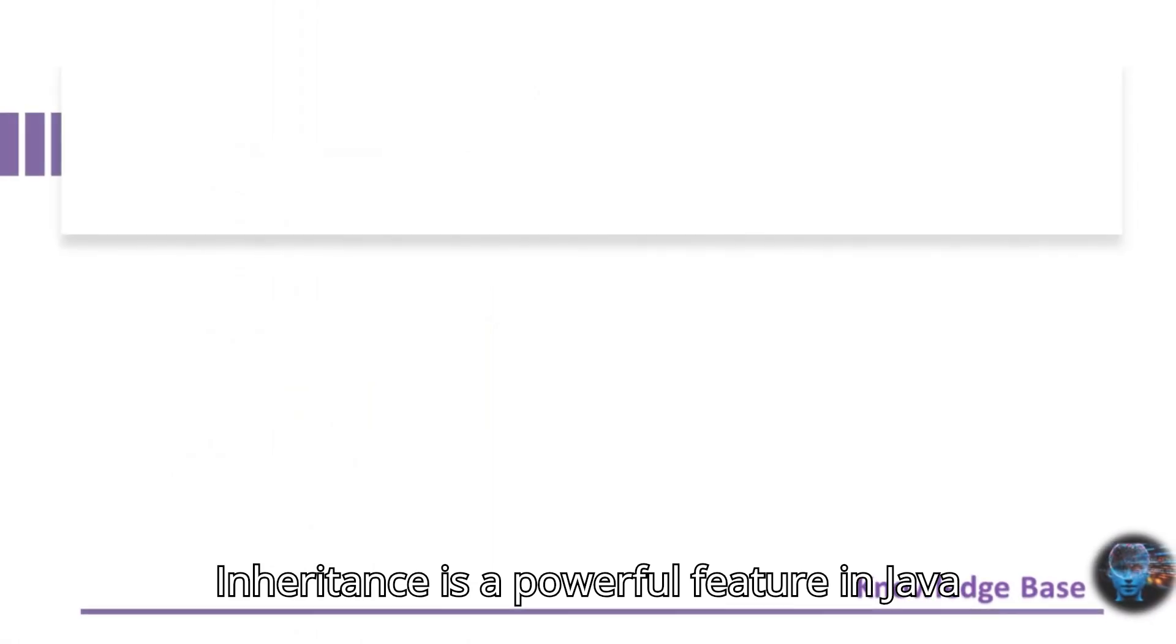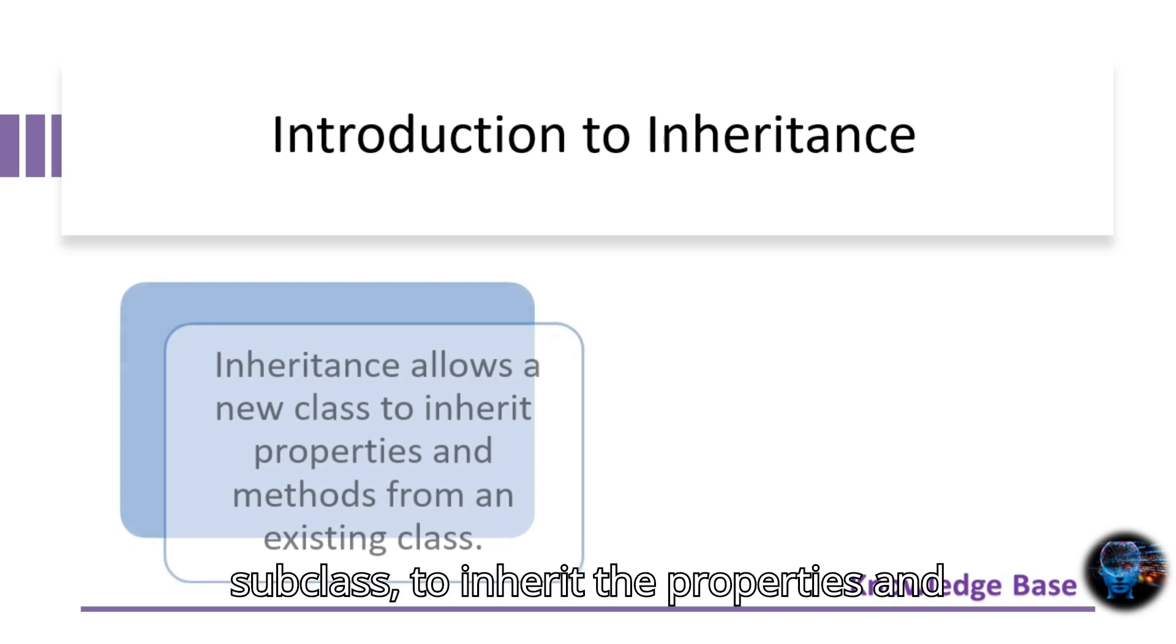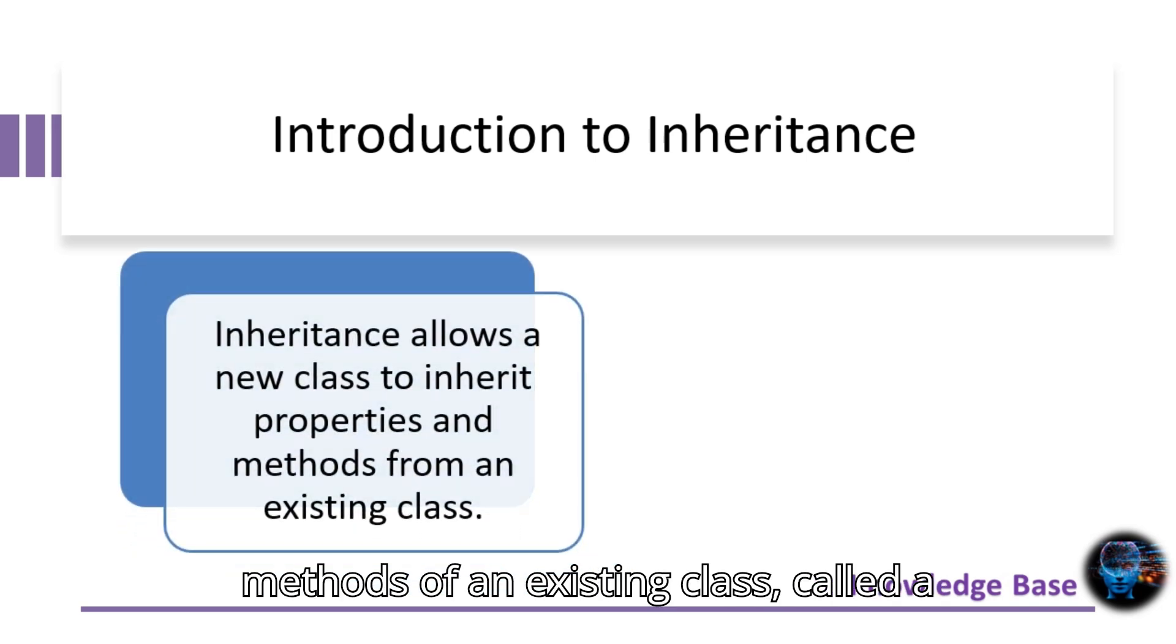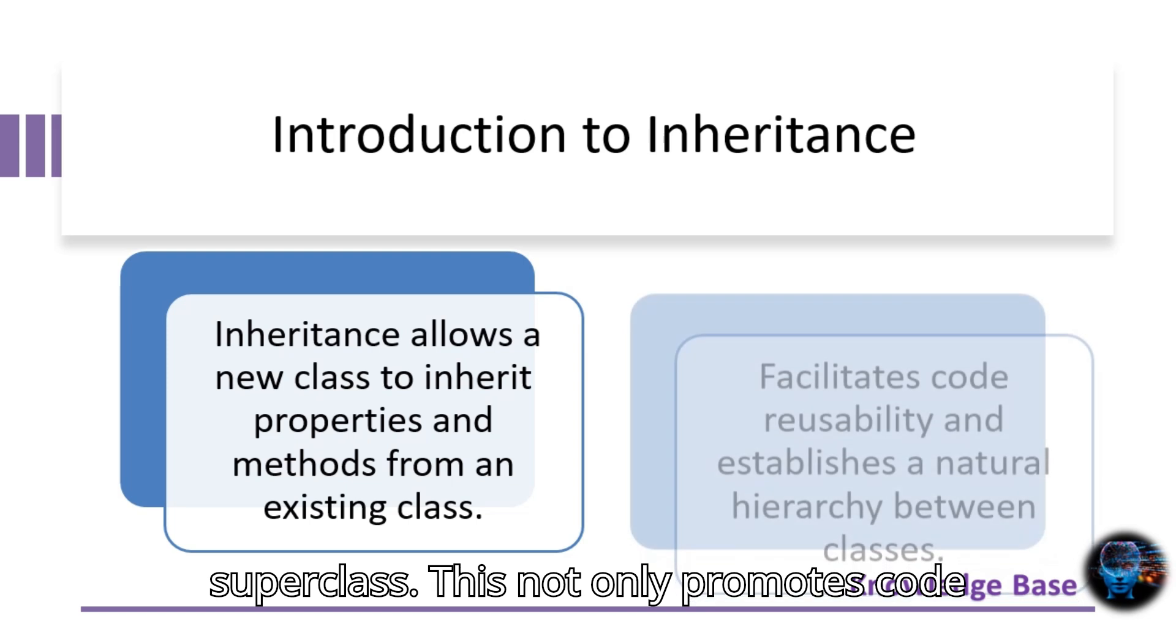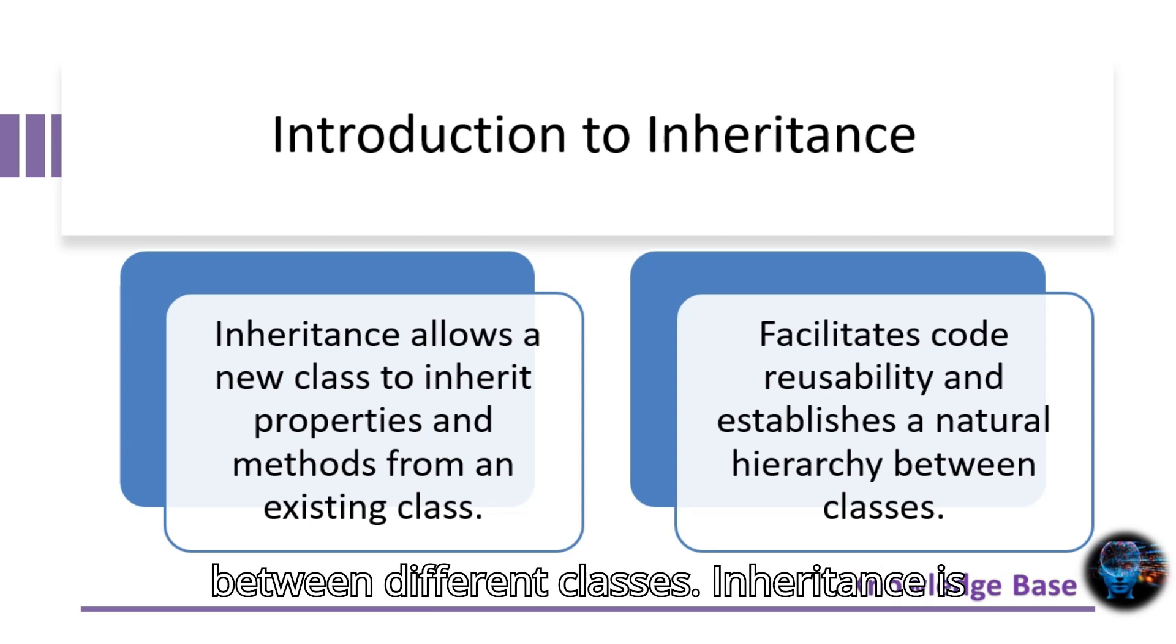Inheritance is a powerful feature in Java that allows a new class, known as a subclass, to inherit the properties and methods of an existing class, called a superclass. This not only promotes code reusability but also helps in establishing a hierarchical relationship between different classes.